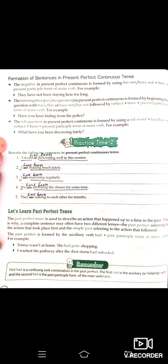The interrogative in present perfect continuous is formed by beginning the question with 'have', 'has', 'have not', or 'has not'. Example: 'Have you been hiding from the police?' — kya tum police se dar ke chup rahe ho?